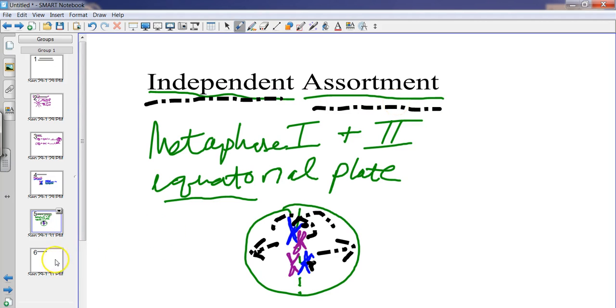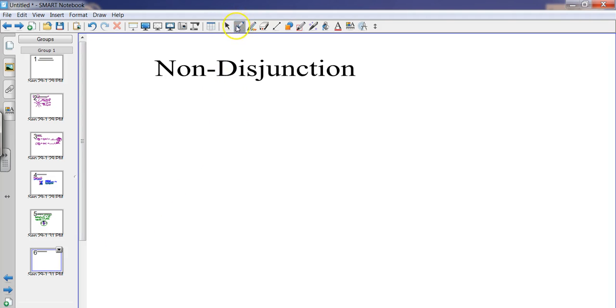And then the last source of variation is called non-disjunction. And non-disjunction is when the chromosomes fail to separate properly. And this happens during anaphase.